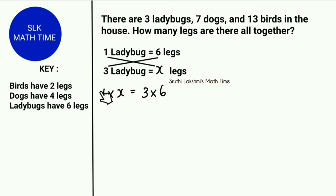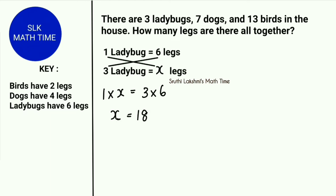Both these equations are equal. Since one equation has a variable and the other doesn't, I'm going to solve the one without the variable. I can do that because both equations — 1 into x and 3 into 6 — are equal. So 3 into 6 is 18, which means x is 18. So 3 ladybugs have 18 legs.